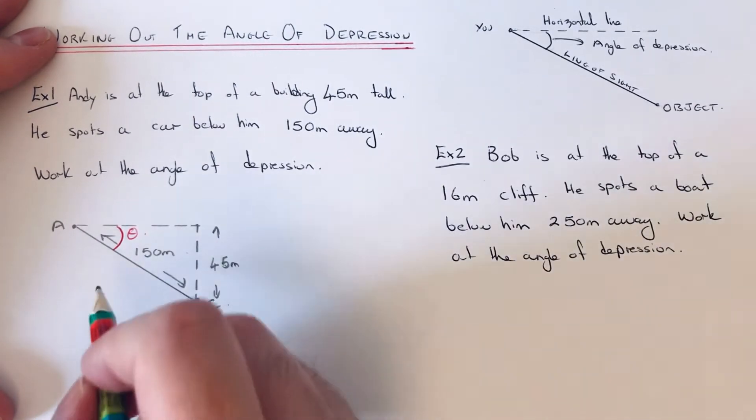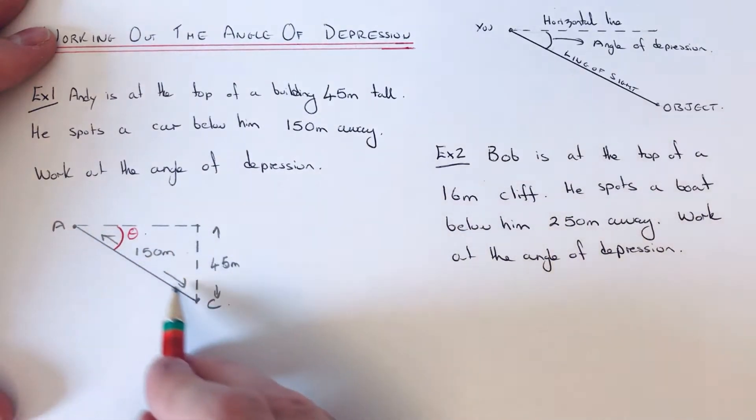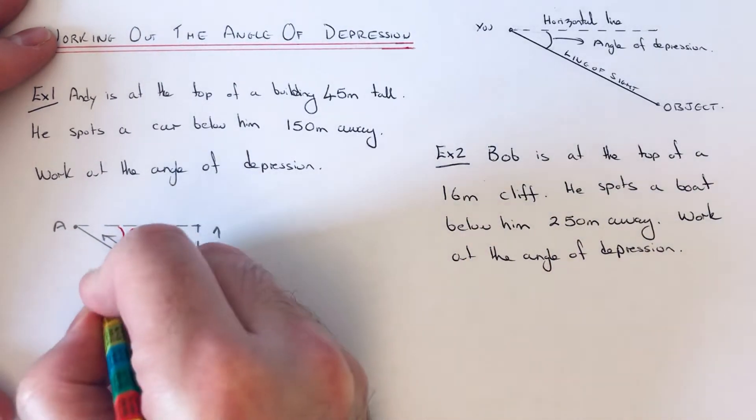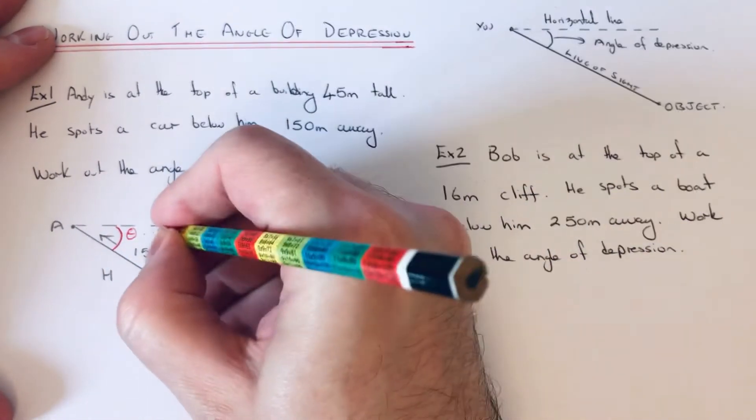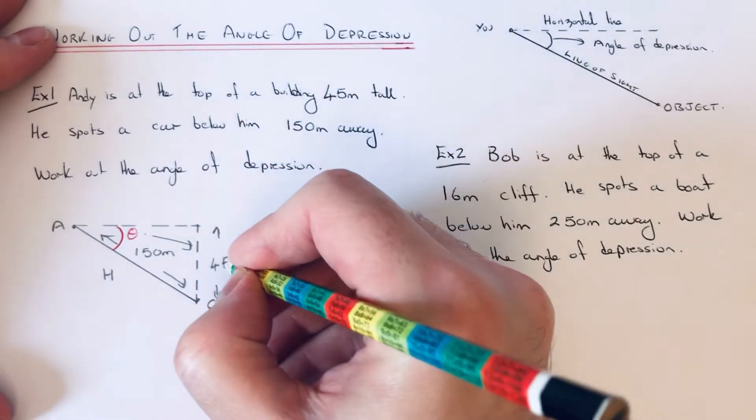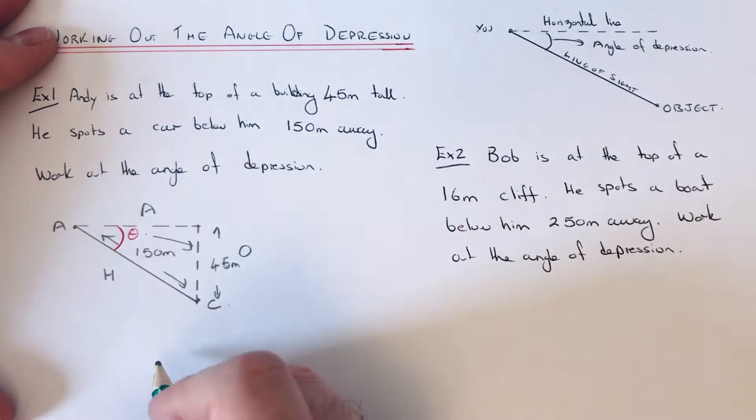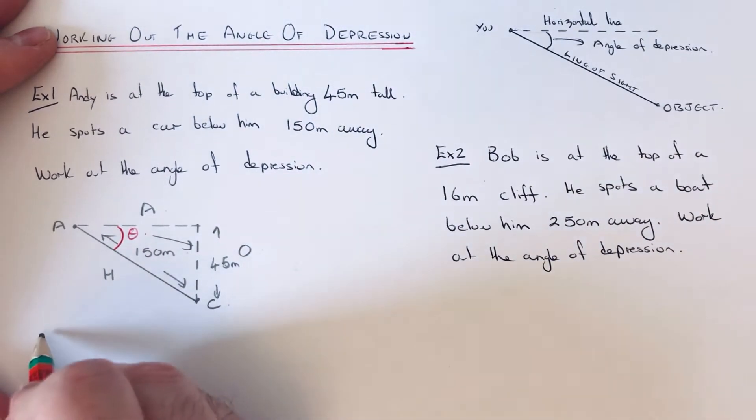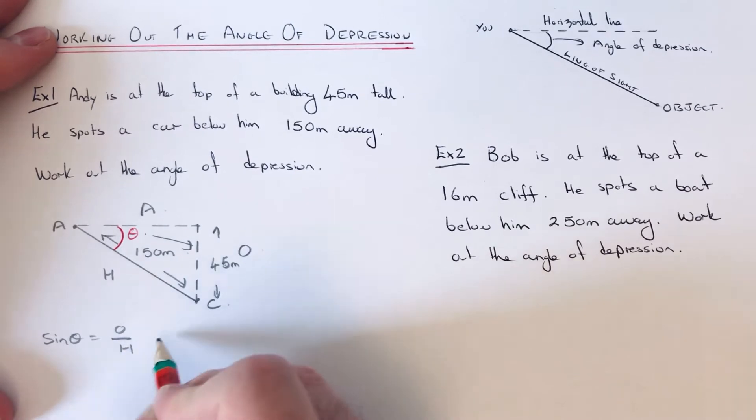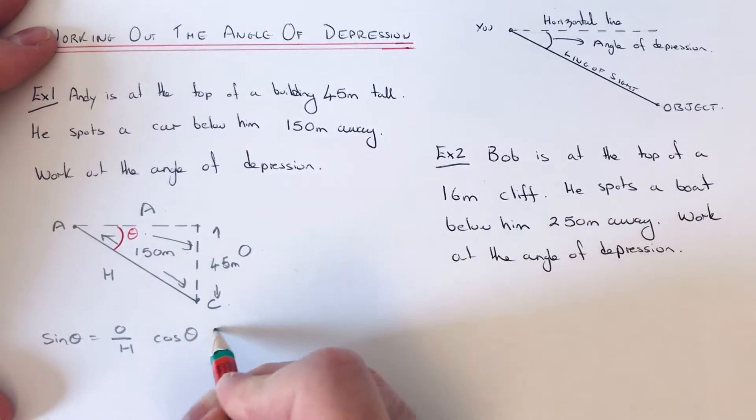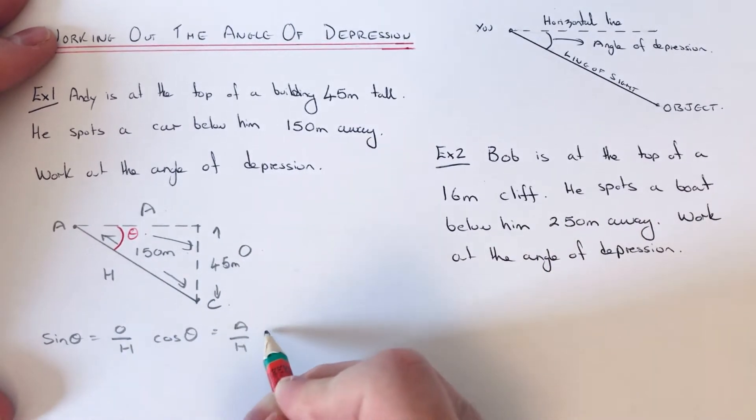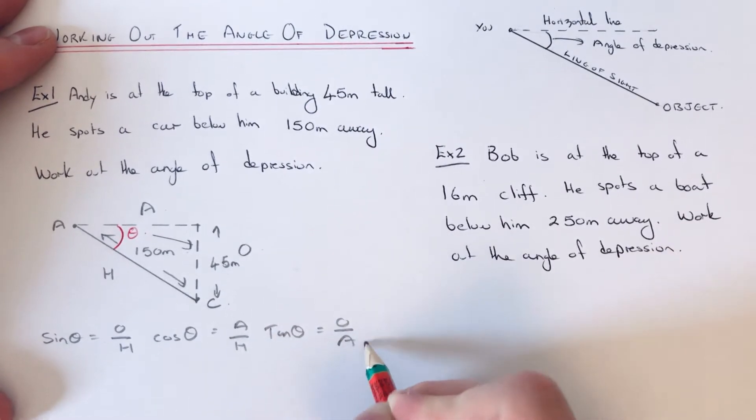So let's label up our triangle first. Our longest side is the hypotenuse, the side opposite the angle of depression is the opposite, and the third side is the adjacent. So our three trig formulas are sin theta equals opposite over hypotenuse, cos theta is adjacent over hypotenuse, and tan theta is opposite over adjacent.